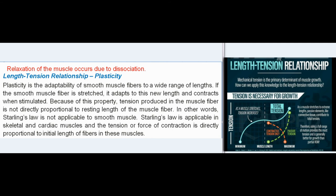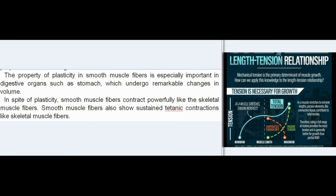Starling's law is applicable in skeletal and cardiac muscles, and the tension or force of contraction is directly proportional to initial length of fibers in these muscles. The property of plasticity in smooth muscle fibers is especially important in digestive organs such as the stomach, which undergo remarkable changes in volume. In spite of plasticity, smooth muscle fibers contract powerfully like skeletal muscle fibers. Smooth muscle fibers also show sustained tetanic contractions like skeletal muscle fibers.